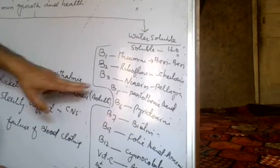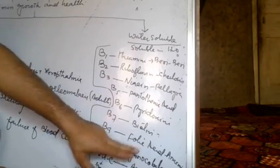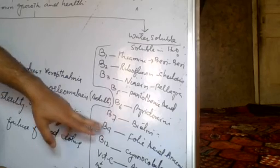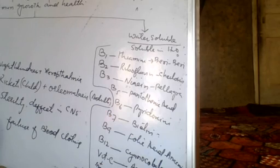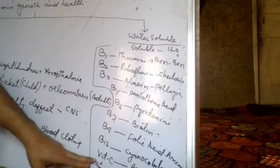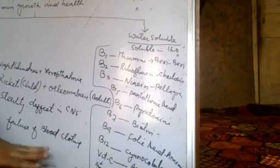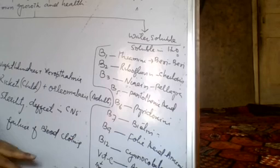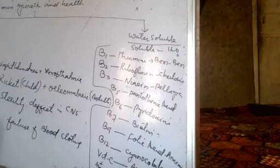Folic acid (B9) and cyanocobalamin (B12) are important for the formation of blood. Vitamin C (ascorbic acid) deficiency causes scurvy, with symptoms including bleeding of the gums.